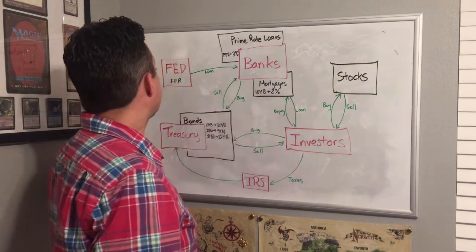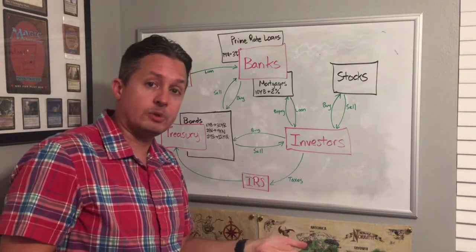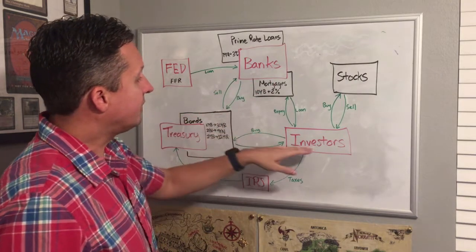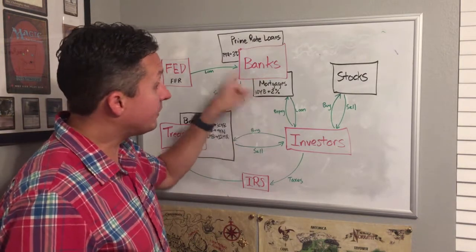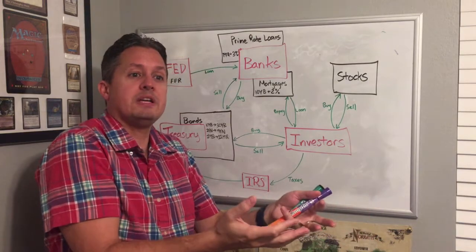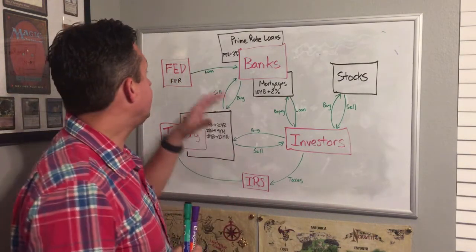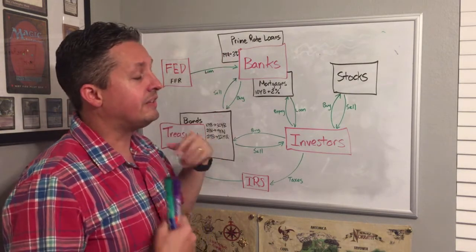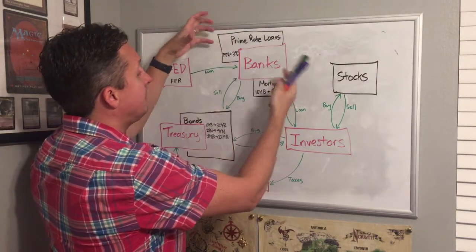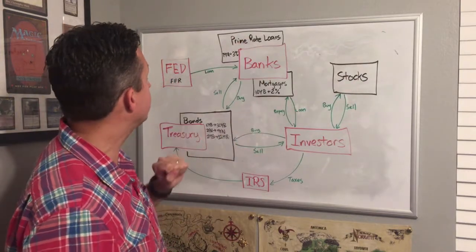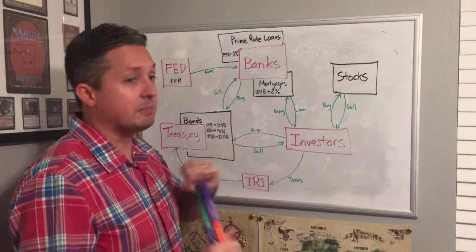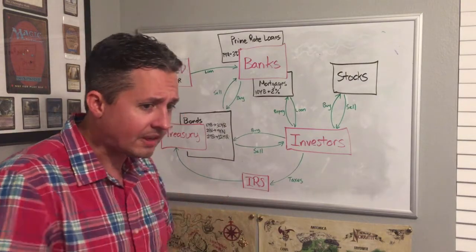If the Fed drops the federal funds rate way down — like they did after the dot-com crash around 2000 — mortgages drop way down and bonds drop way down. Investors now have access to very cheap borrowing. If you can borrow money at near-zero percent, invest it, and make a return, that money comes back into the market. When rates drop, more money gets created through fractional reserve lending; the money supply multiplies up and eventually makes its way into stocks, mortgages, and bonds, creating bubbles across all asset classes.